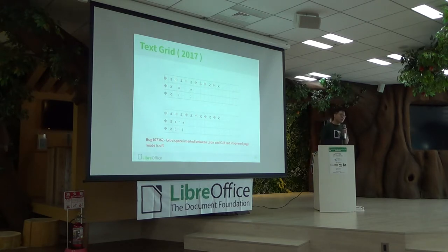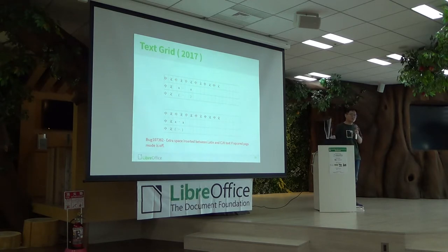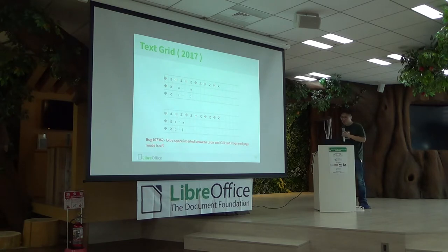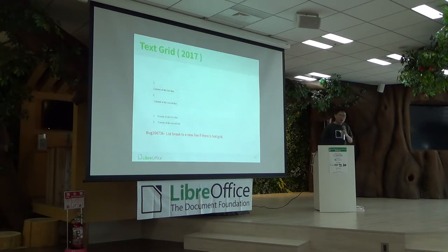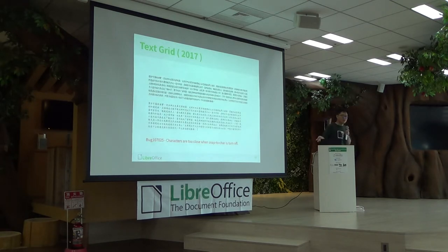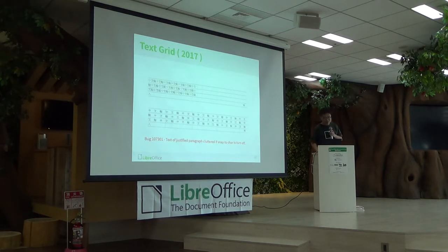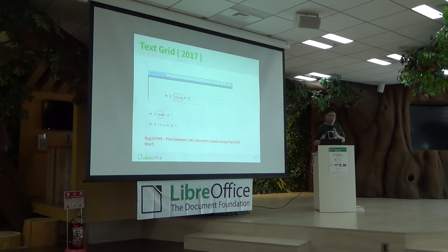So in 2017, I decided I wanted to test the CJK features systematically by combining all the settings together and trying to fix those issues as much as possible. We had problems like an extra space being inserted between English and Chinese, extra new lines after numbering lists, and in some situations characters would be too close together and just look wrong. I also did a side-by-side comparison of Microsoft Office and LibreOffice to find those small differences. I took this as an annual project and presented it, I think that was in Rome.